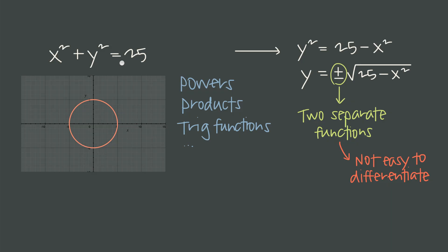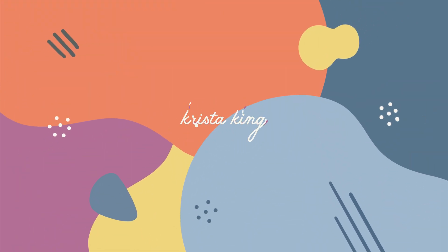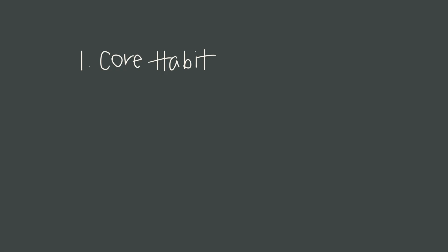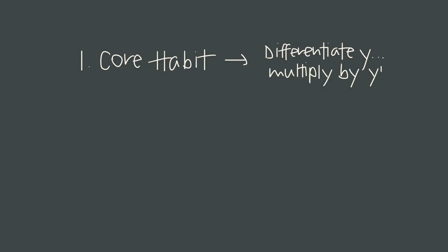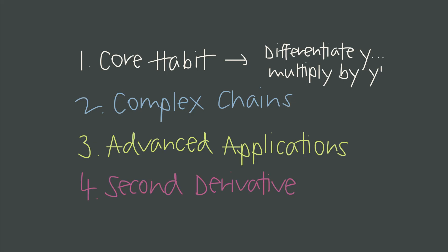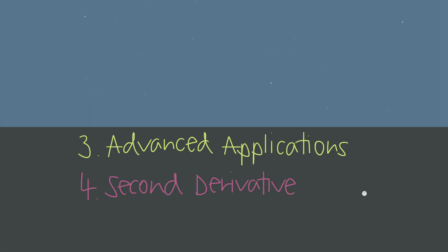I'm going to show you the single habit that makes implicit differentiation automatic, and then we'll handle tangents, second derivatives, and other tricky cases. The core concept is: every time you differentiate a term that includes y, you must apply chain rule, which means you multiply by y prime instantly. We'll also cover combining implicit differentiation with other derivative rules, finding tangent lines and slopes at particular points, and finding second derivatives — all critically important for the AP exam.